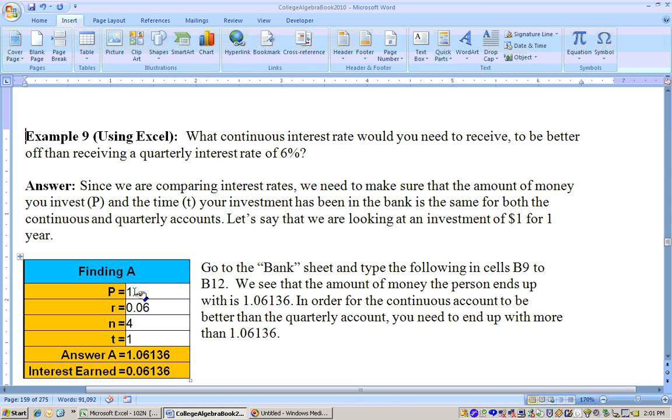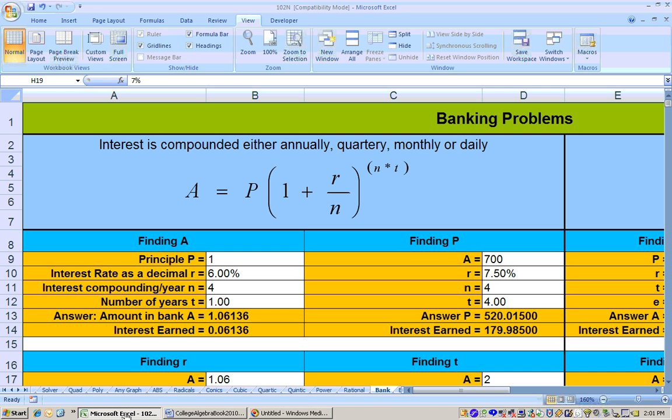So I start off by putting $1 at 6% compounded quarterly, so N is 4 for one year. I did that on the Excel sheet right here: 1, 6%, 4, and 1. And I get this is what you would end up with after one year.